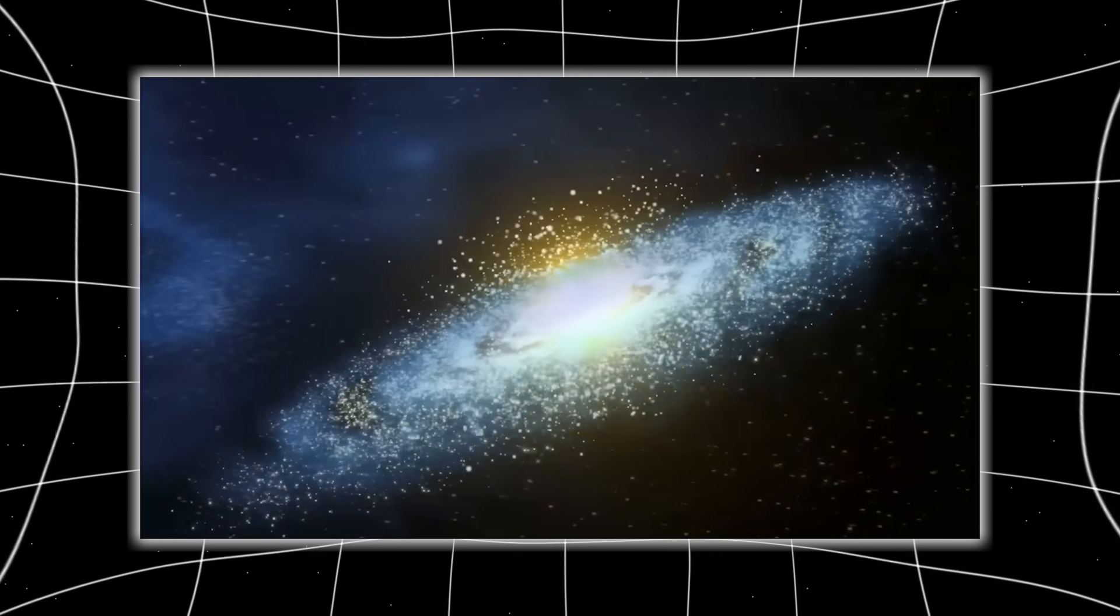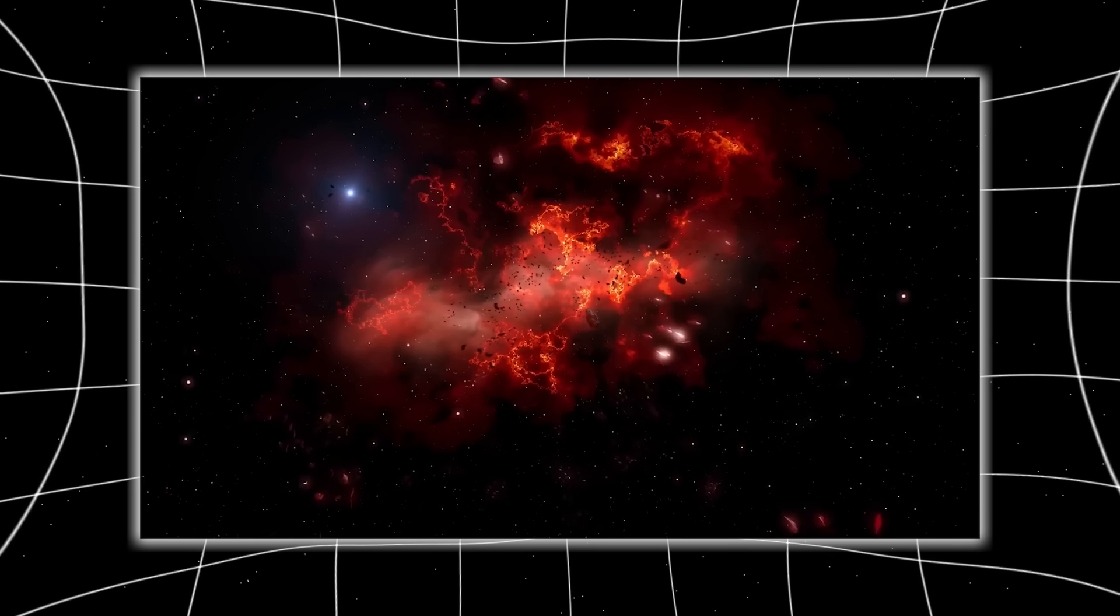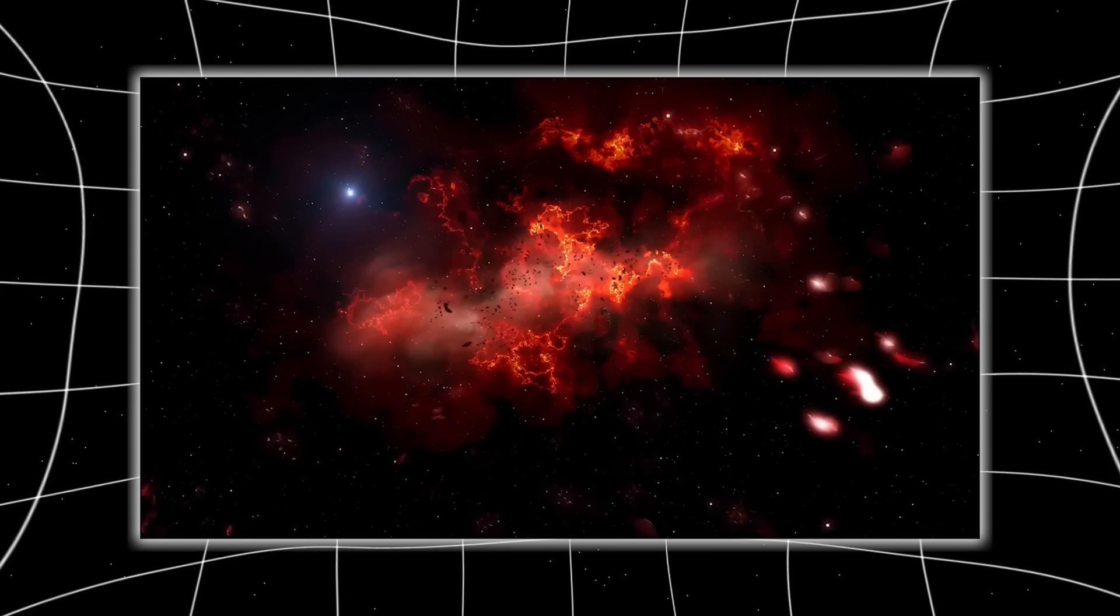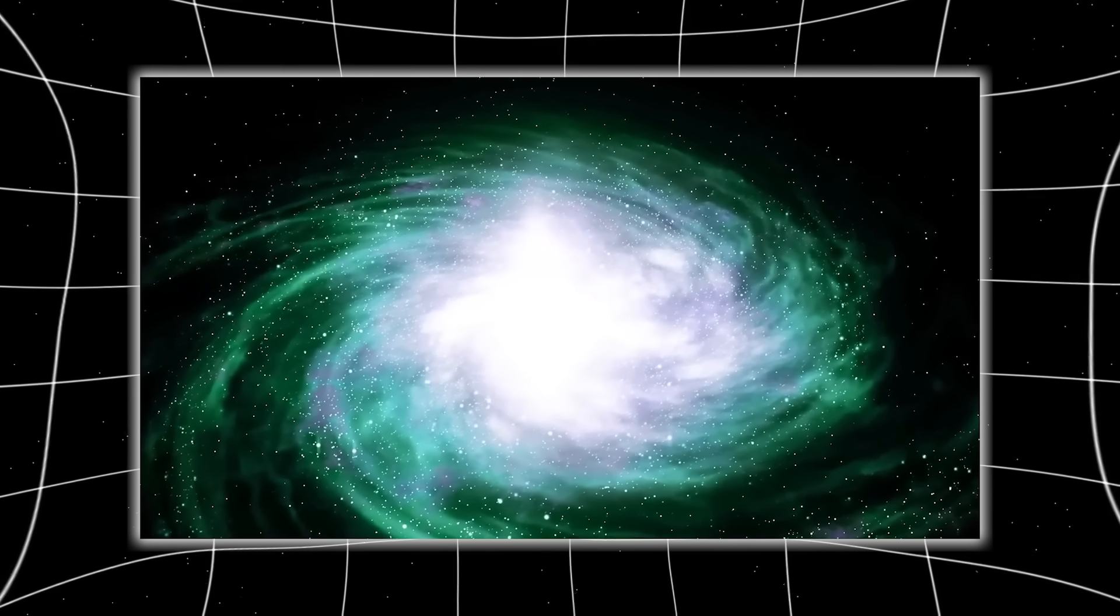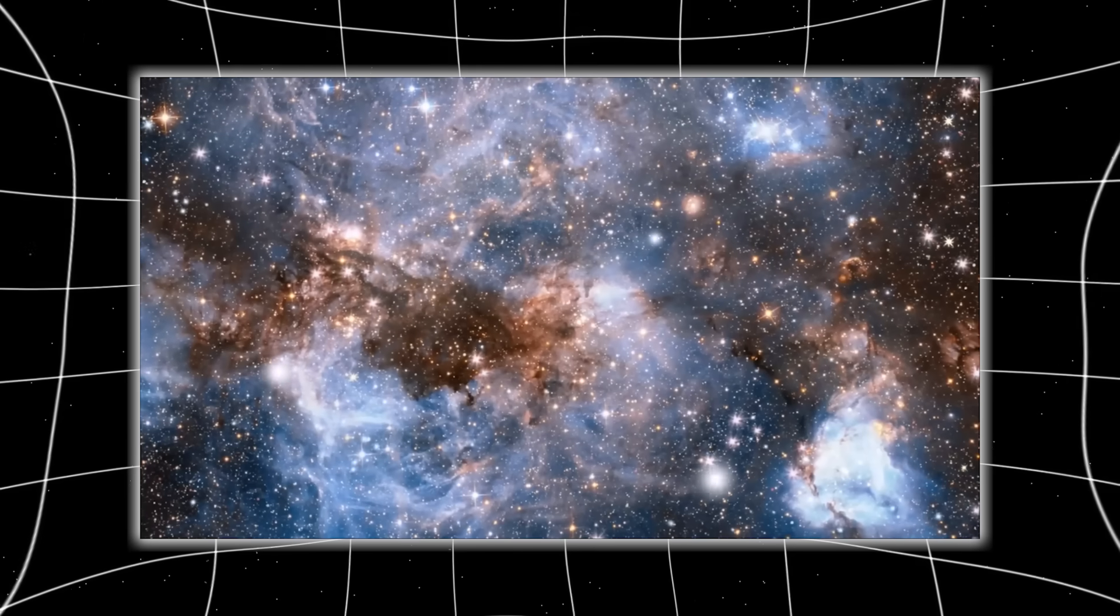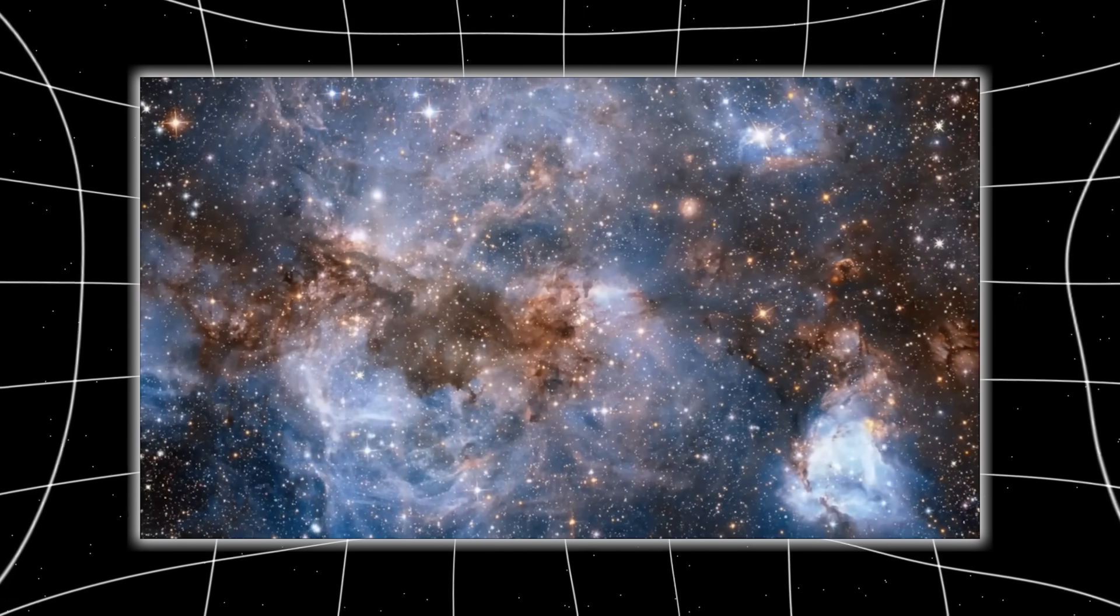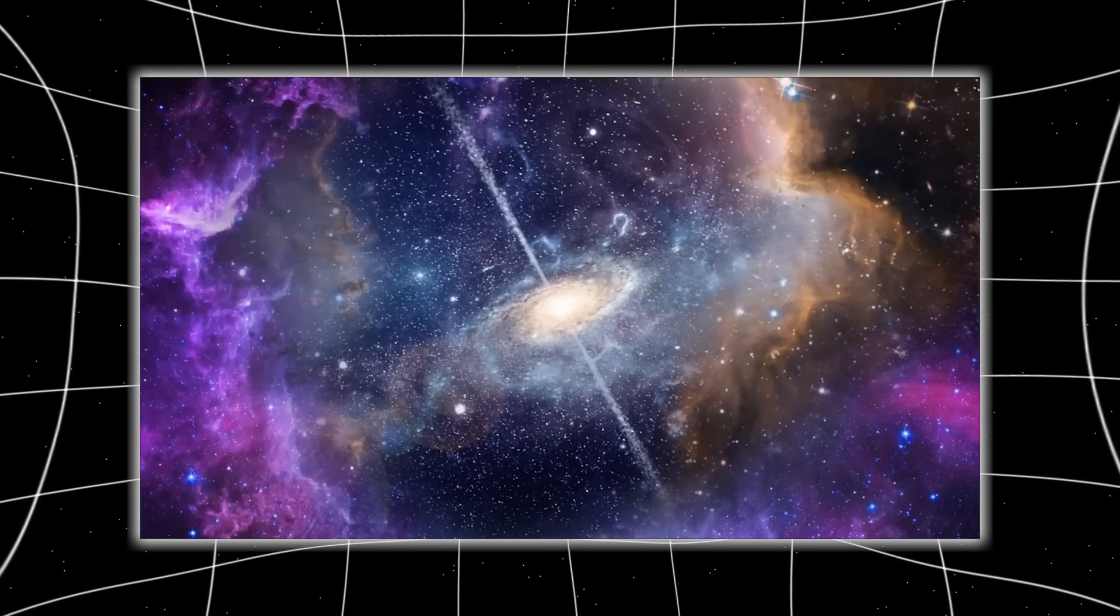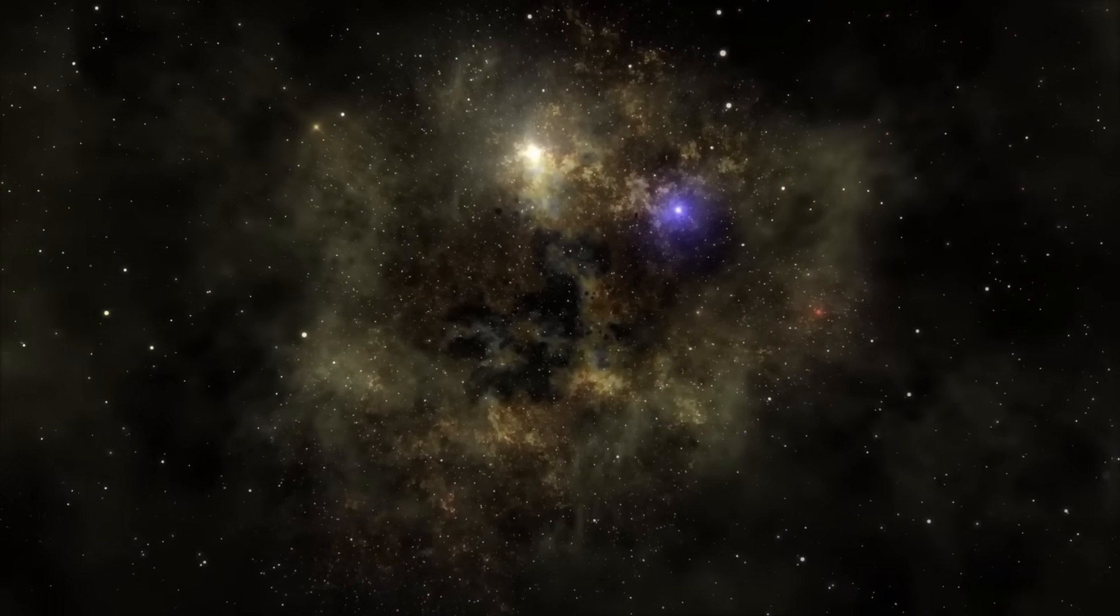These objects are not behaving like galaxies. They are behaving like something else entirely. Something we don't even have terminology for. Some scientists now quietly suggest that these might not be galaxies at all, but an unknown category of cosmic object that predates every model we've developed. And that possibility is scarier than any anomaly so far, because it means we aren't just missing details. We may be missing an entire chapter of cosmic evolution.